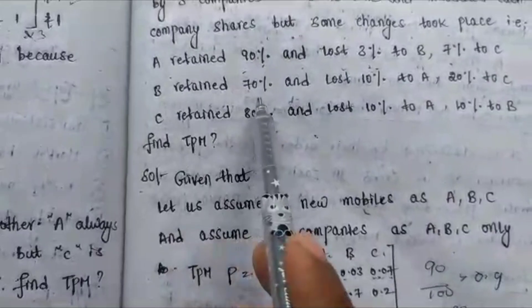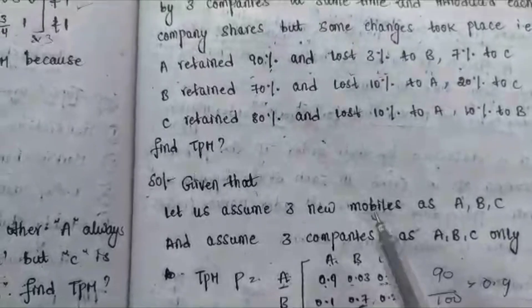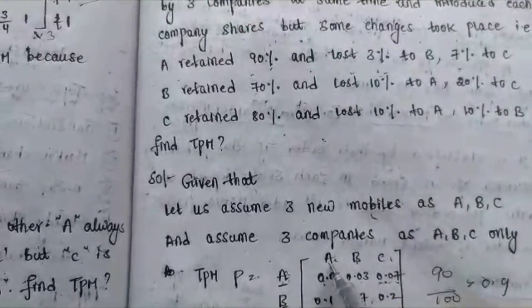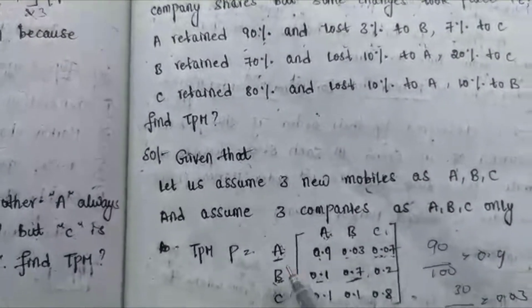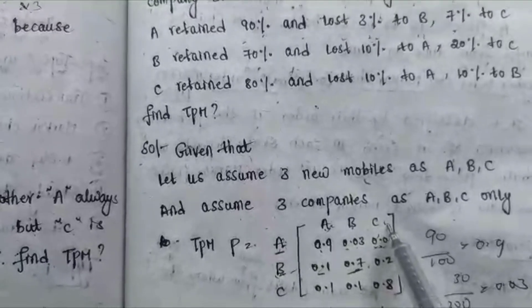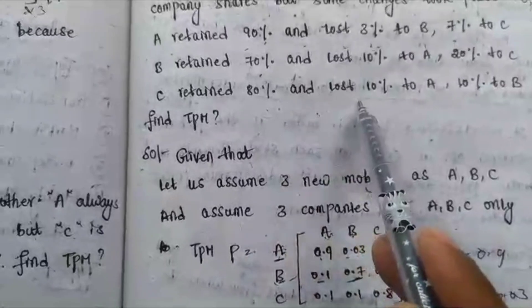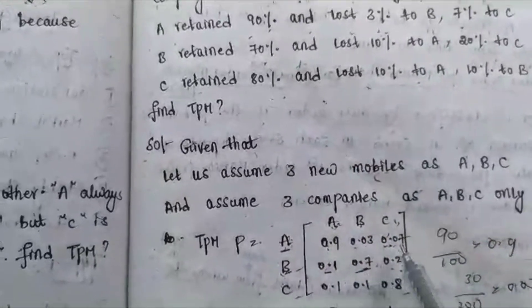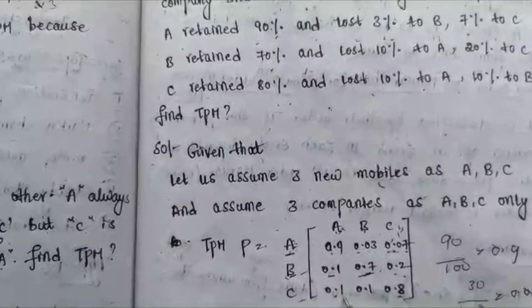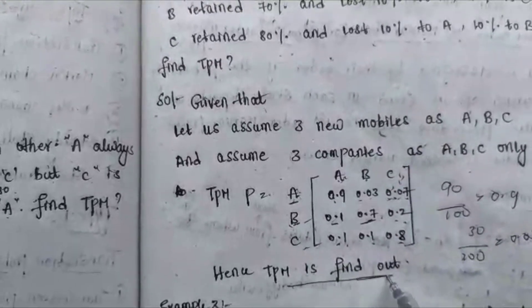Company B retained 70%, lost 10% to A, and lost 20% to C. So B→B = 0.7, B→A = 0.1, and B→C = 0.2. Company C retained 80%, lost 10% to A, and lost 10% to B. So C→C = 0.8, C→A = 0.1, and C→B = 0.1. Hence the TPM for the three mobile companies is fully determined.